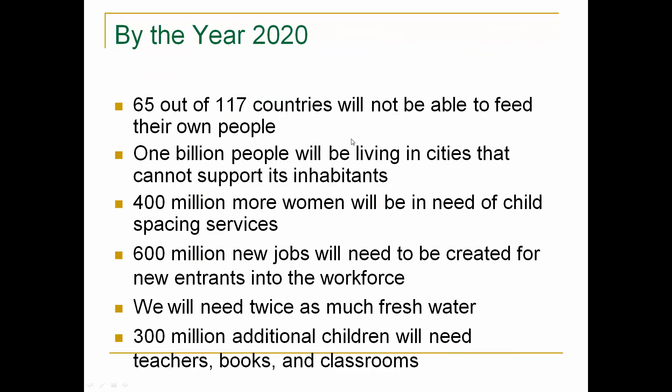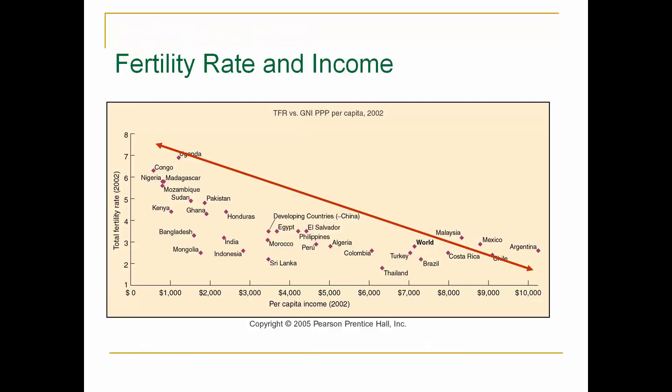By the year 2020, 65 out of 117 countries will not be able to feed their own people. One billion people will be living in cities that cannot support its inhabitants. 400 million more women will be in need of child spacing services. 600 million new jobs will be needed. We'll need twice as much fresh water. And 300 million additional children will need teachers, books, and classrooms.